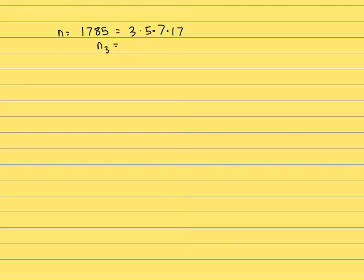Spoiler alert, if there was, the Feit-Thompson theorem is wrong, so there shouldn't be. We're looking for things congruent to 1 mod 3 that divide 5 times 7 times 17. So that's 2 mod 3, that's 1 mod 3, and that is 2 mod 3.